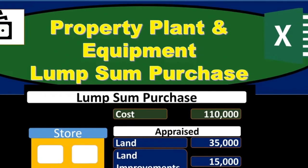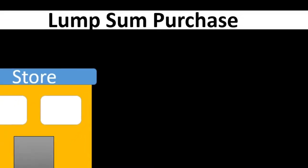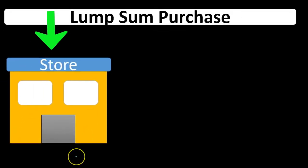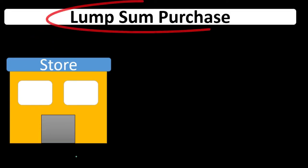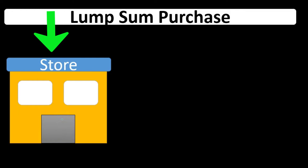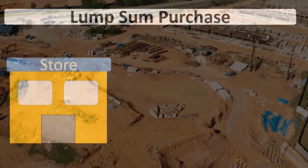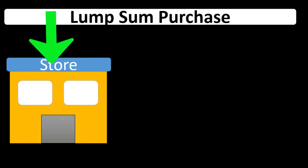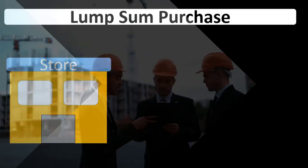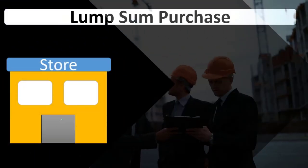In this presentation, we will discuss lump sum purchases as it relates to property, plant, and equipment. When we purchase something like a building, we typically have one lump sum purchase for more than just the building, because the building is on the land. If we're including the land, we purchased the land with the building, and if there are any lease improvements that we need to break out separately, those too would need to be broken out.